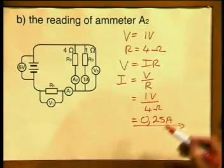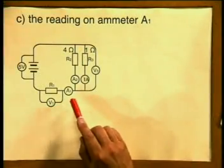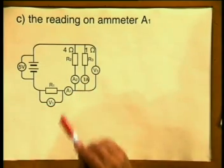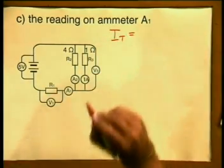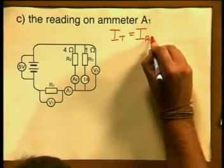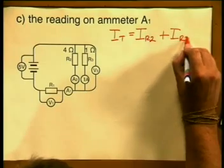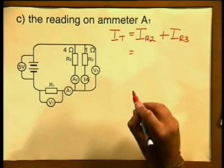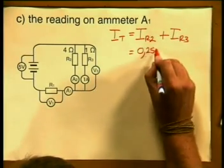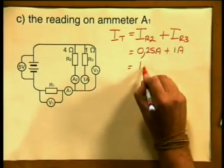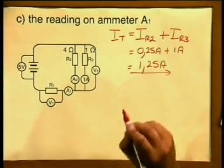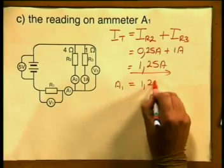So the reading on ammeter A2 will be 0.25 amperes. To calculate the value on ammeter A1, we use another rule of parallel circuitry. Ammeter A1 measures the total current in the electrical circuit. The current splits as it passes through R2 and R3, so the total current equals the current through R2 plus the current through R3. The current through R2 is 0.25 amperes and the current through R3 is 1 ampere, giving us 1.25 amperes. The reading on ammeter A1 must equal 1.25 amperes.